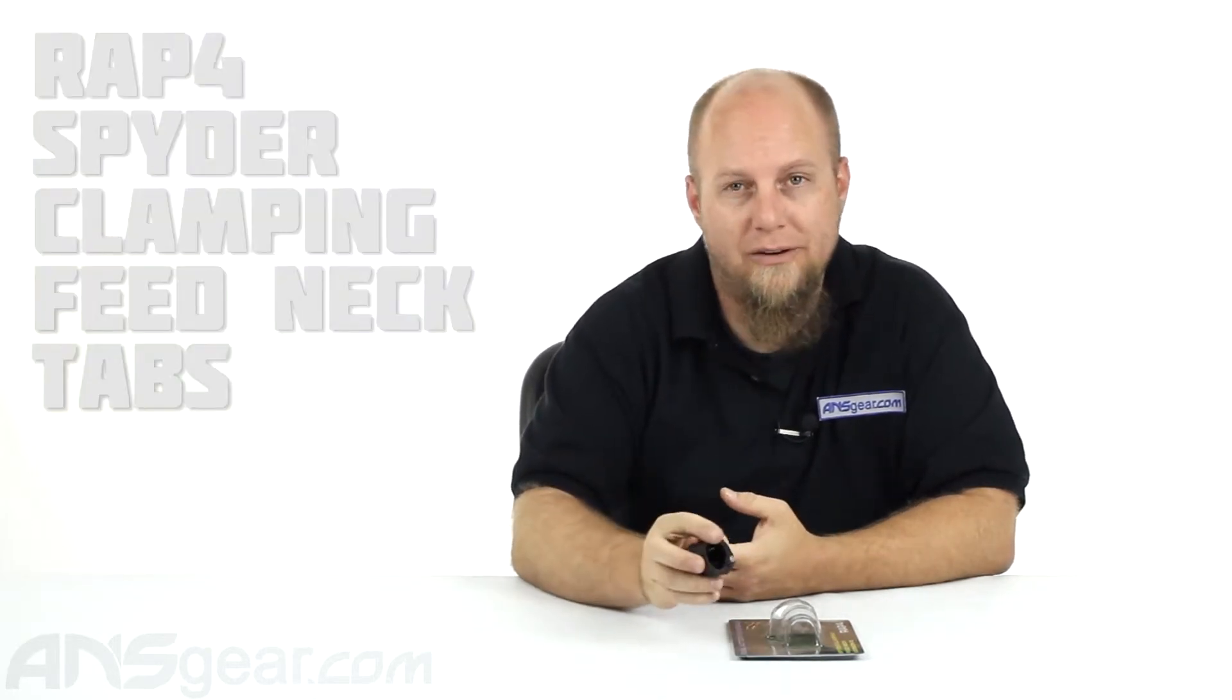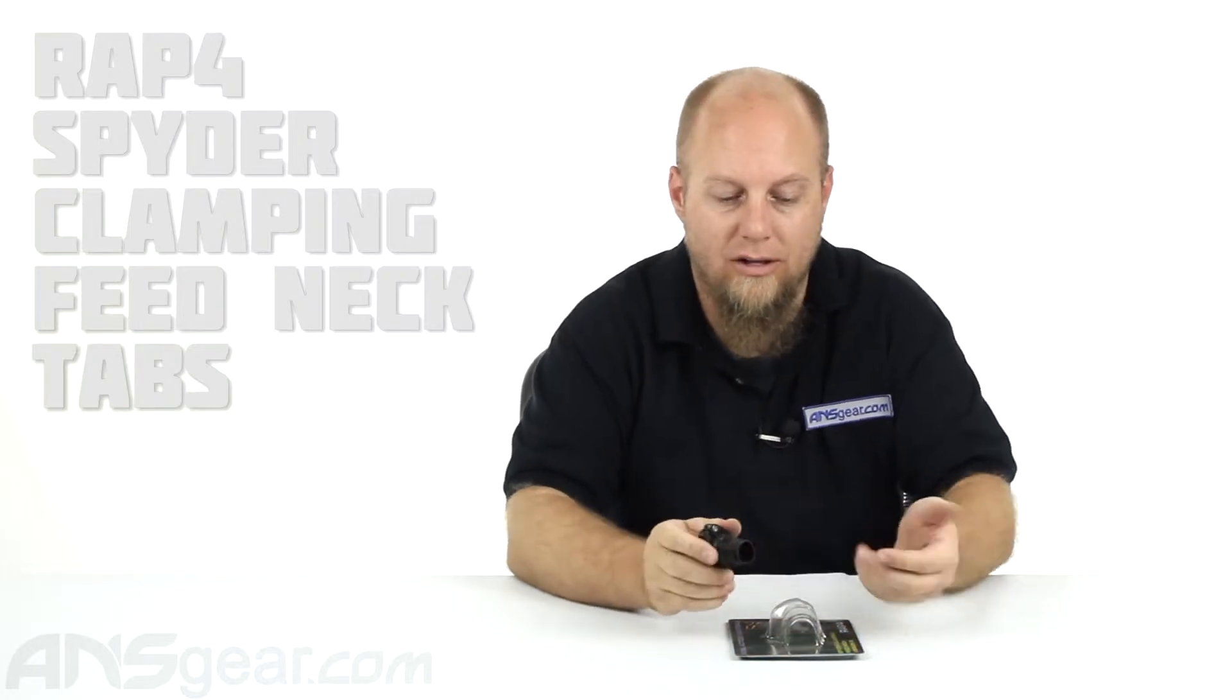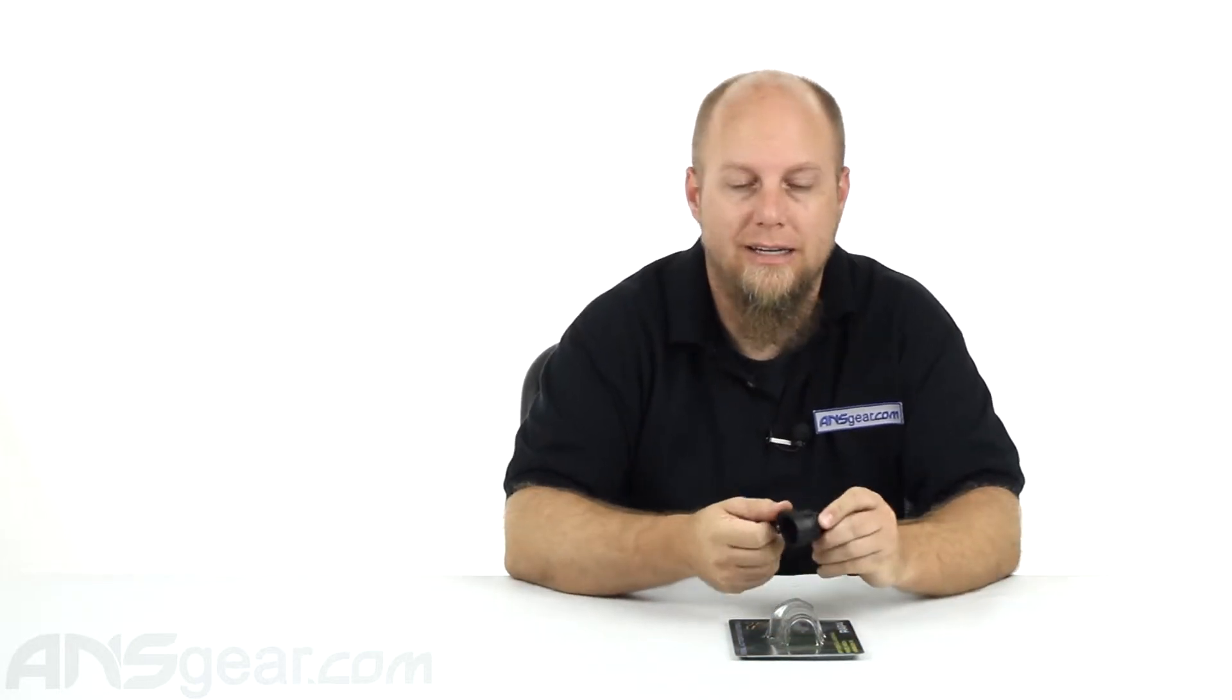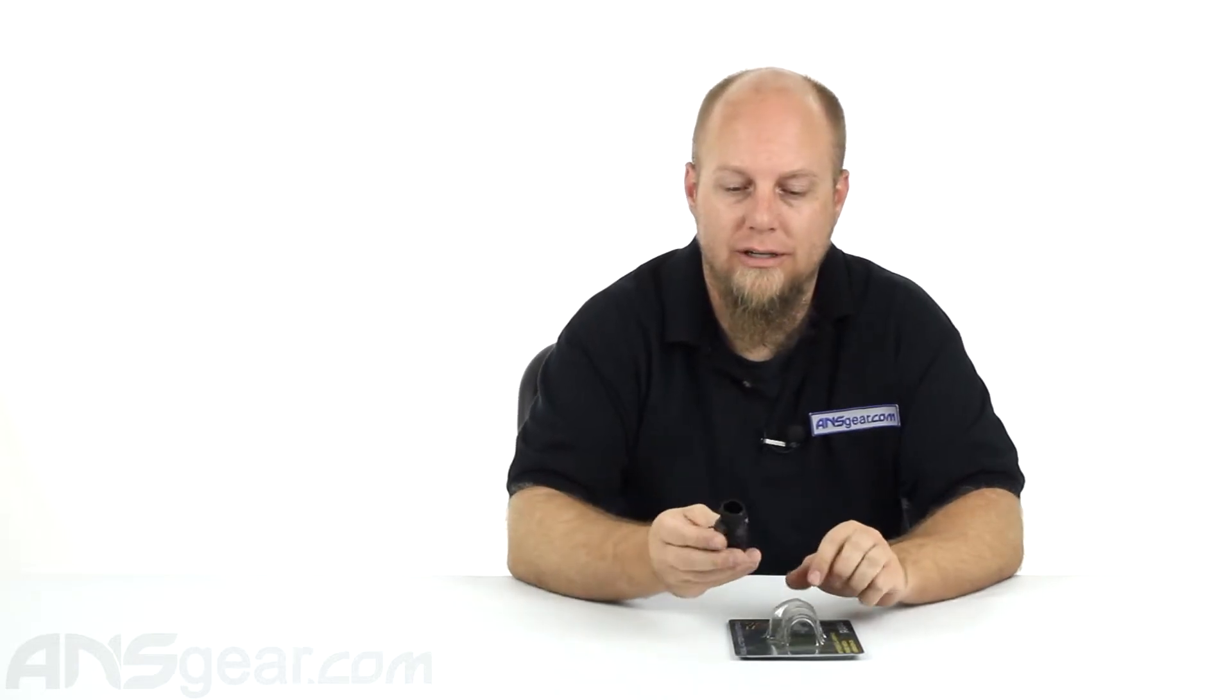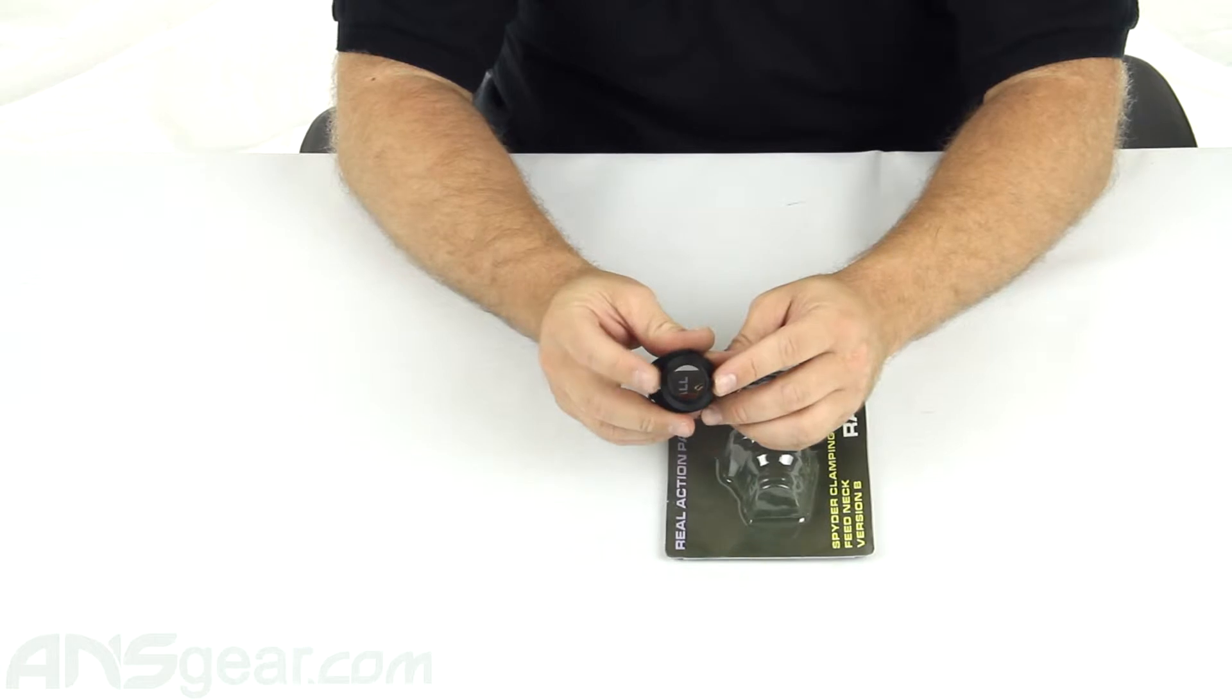This is a RAP4 spider feed neck. Now this one they call on their box version B. I've always referred to this version as a tabs version. You can see that there's two tabs on the side of the feed neck right here.